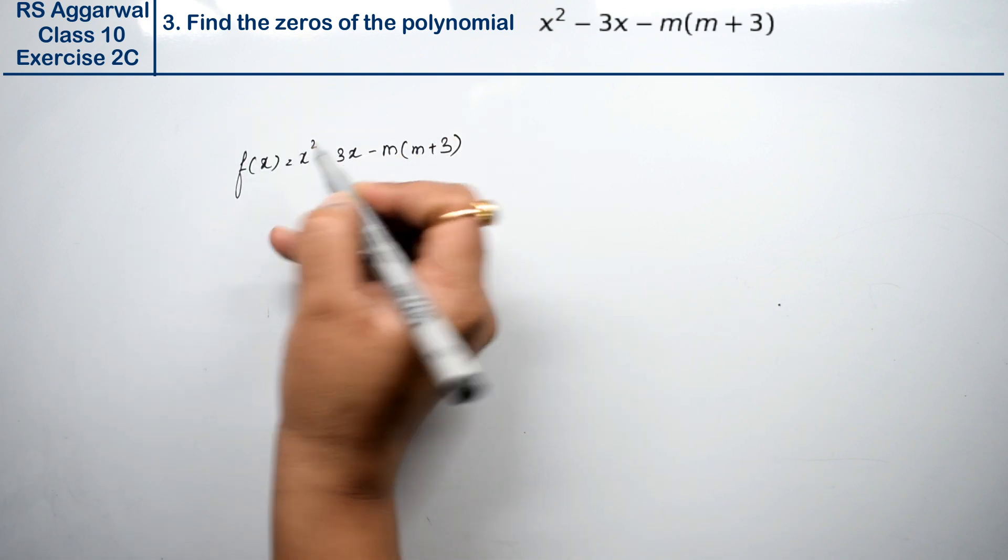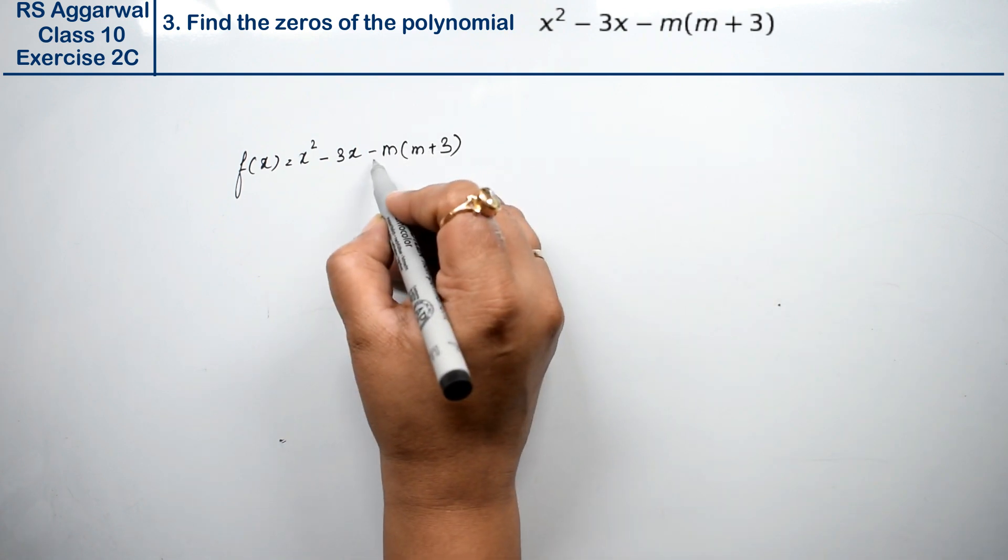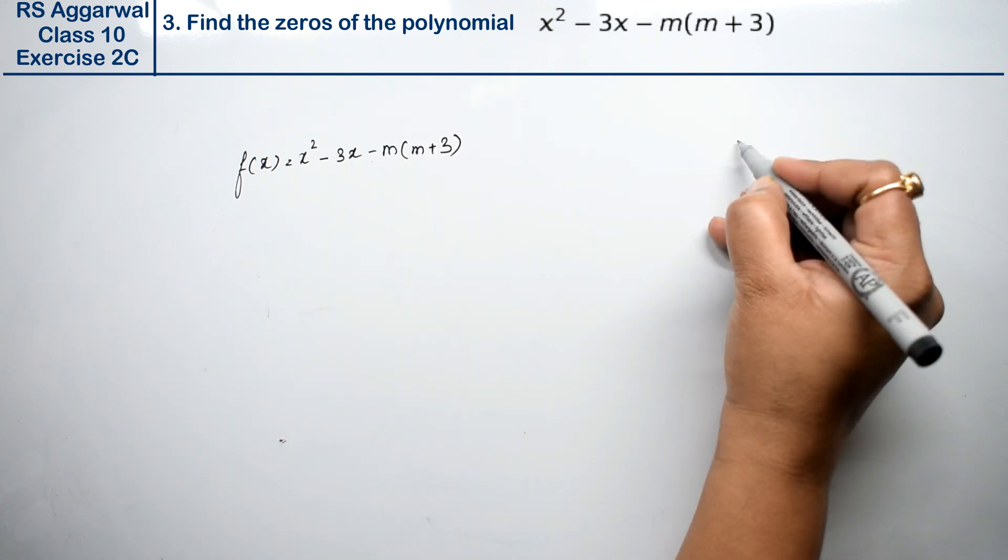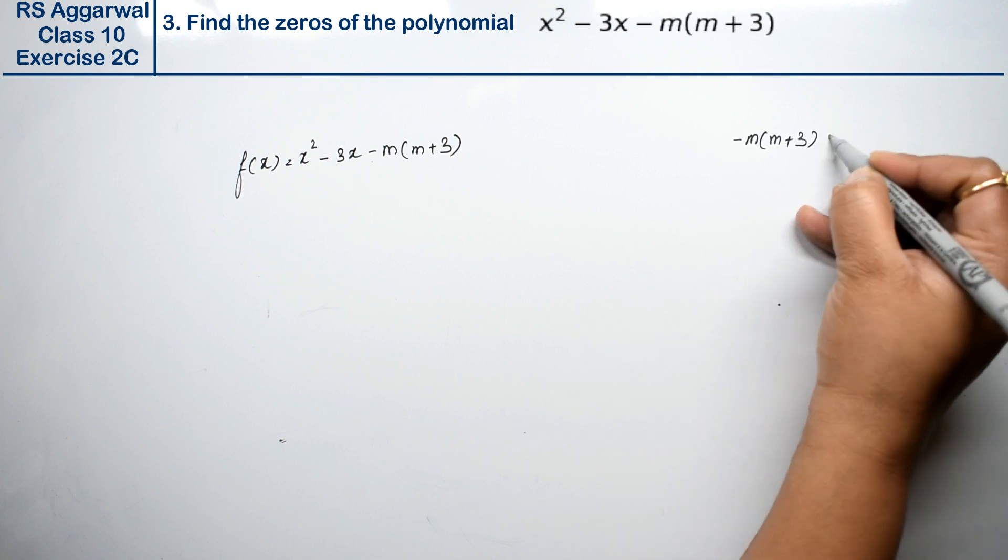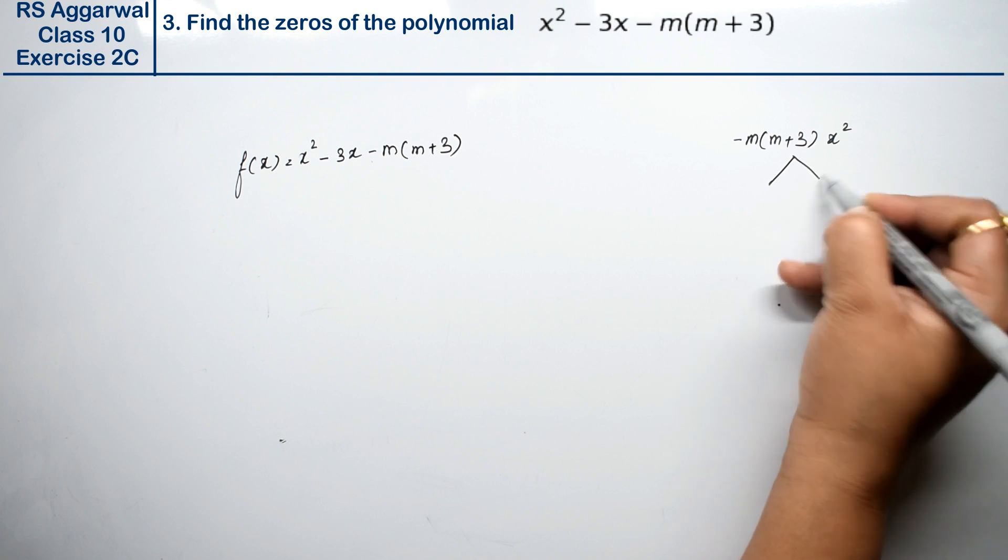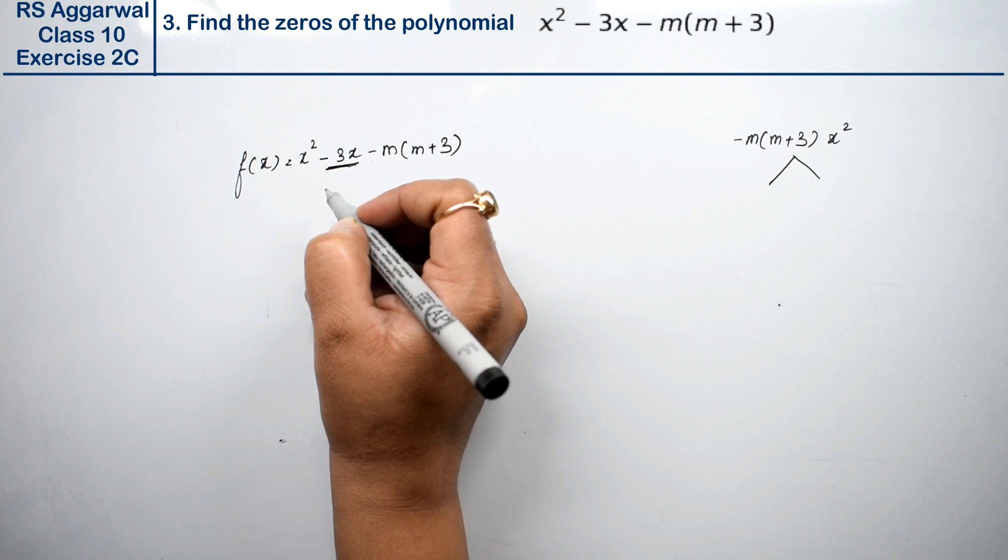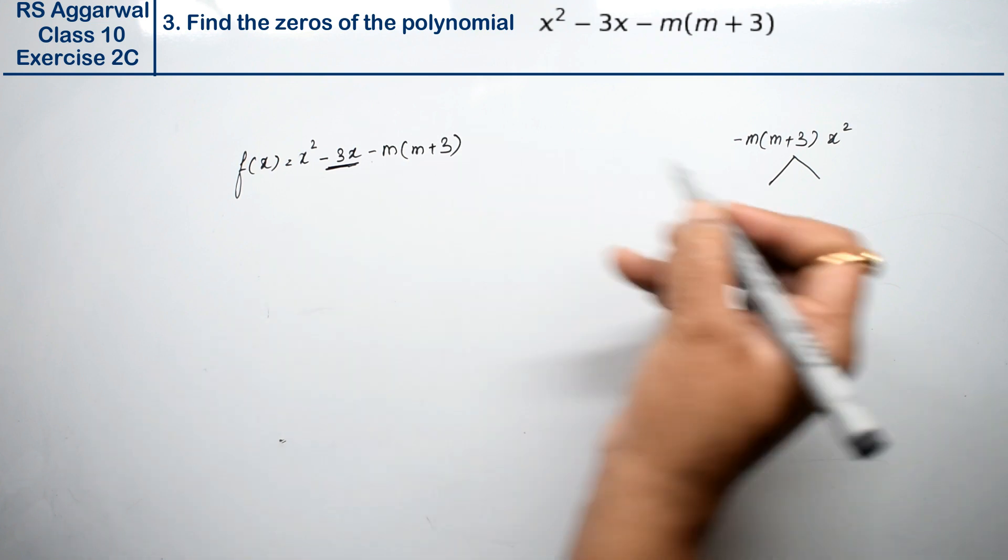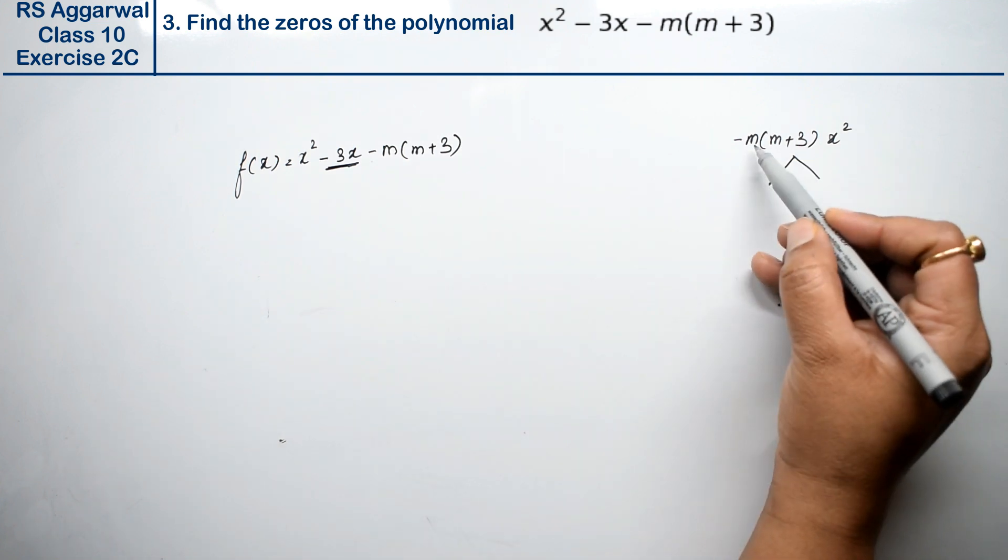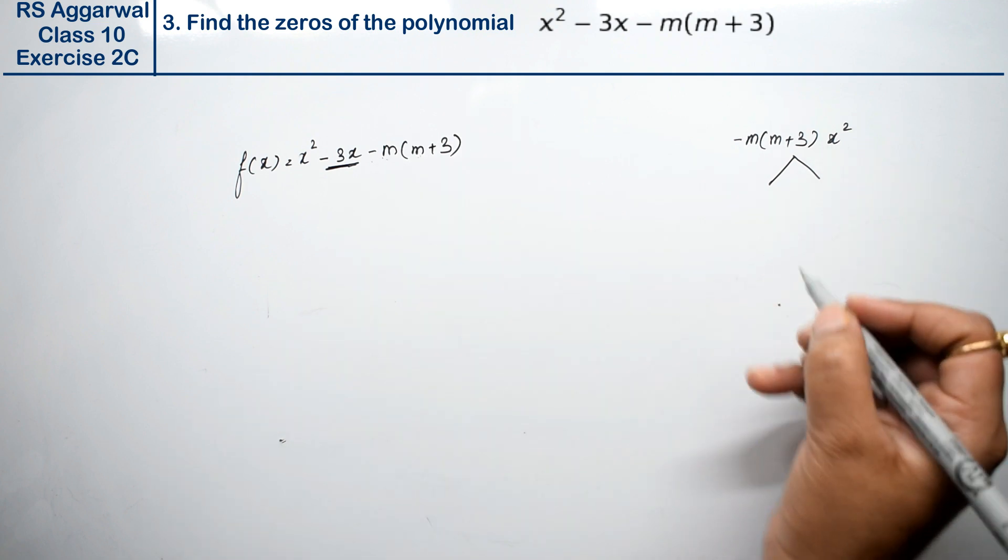This is f(x) and we have to find its factors. I have told you that this is multiplied by middle term splitting. So here is m + 3, x square. We make two factors that add or subtract to give minus 3x. If you don't understand this question, please watch my earlier factorization videos in class 9 and then watch this. Whenever you get this type, multiply these two and check.